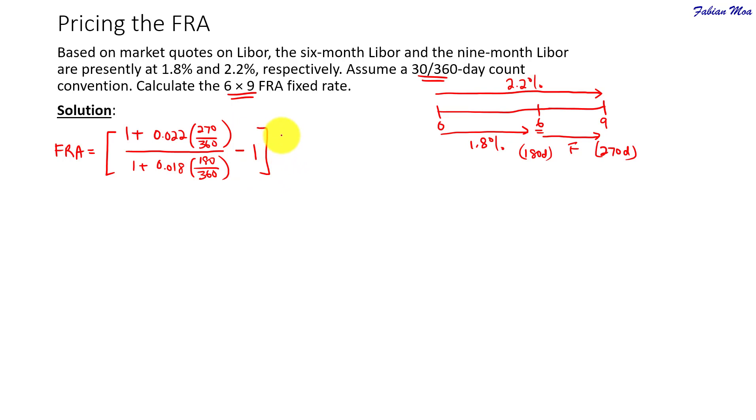Okay, and then we will annualize it by taking the remaining forward period. This forward rate is for 3 months over 12 months. Okay, so that's 360 days over 90 days.